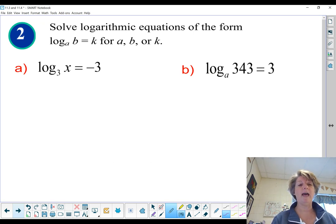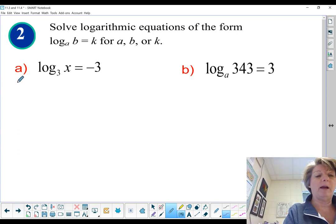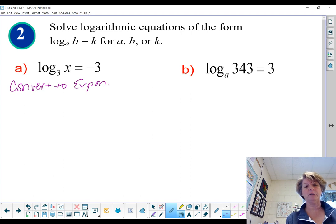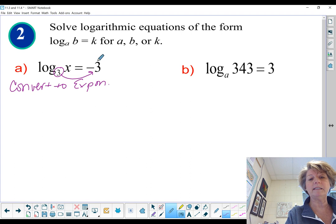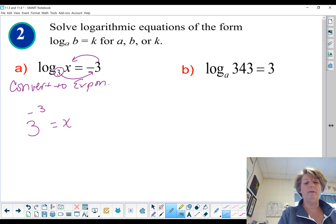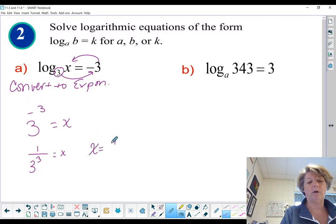Example 2, log base 3 of x equals negative 3. We want to solve for the variable that's missing. And in order to do that, I've got to think in my head, what does a log question mean? To me, that means let's swing it back into exponential form. So I'm going to convert. Convert to exponential. Just like we had done on that chart on the prior page. To do that, write this down. I can see you. Are you writing it down? 3 to the negative 3 equals x. Actually, I can't see you, but I wish I could.